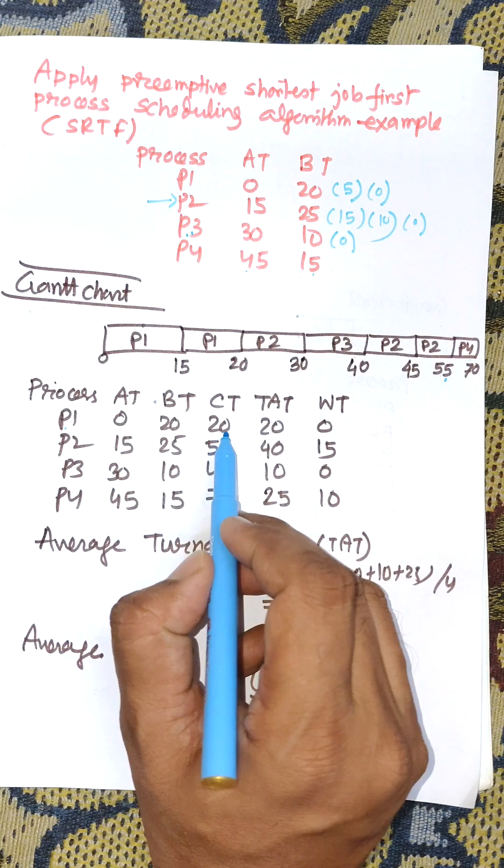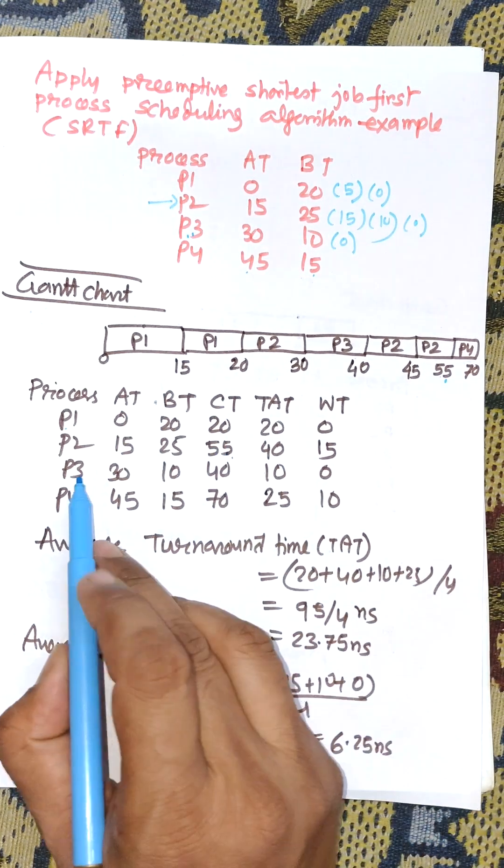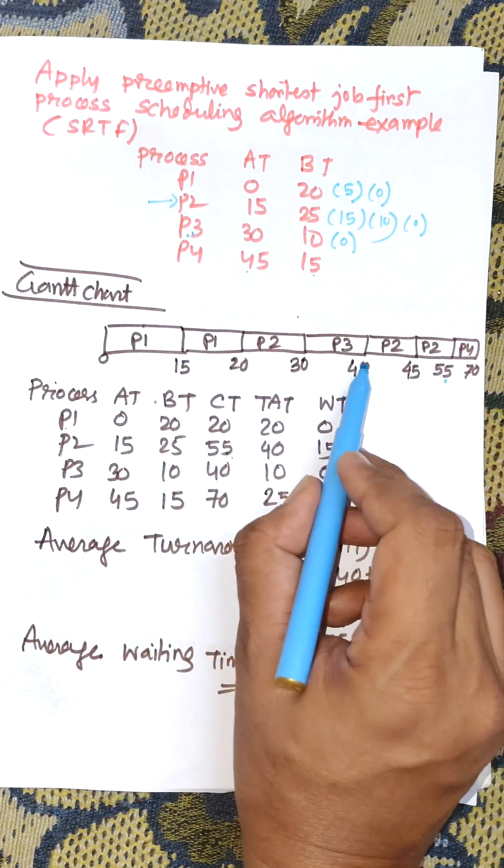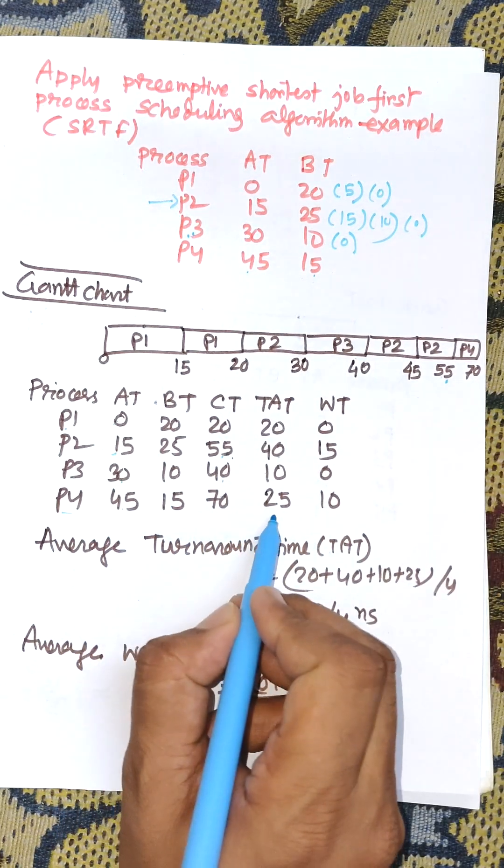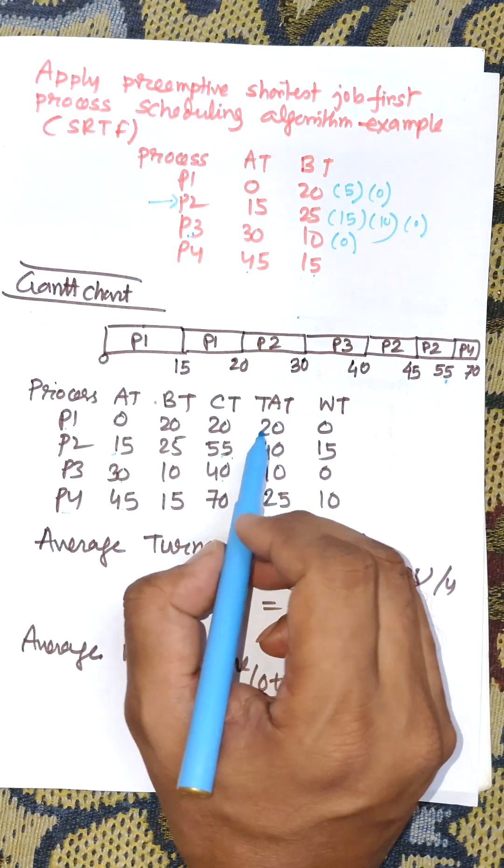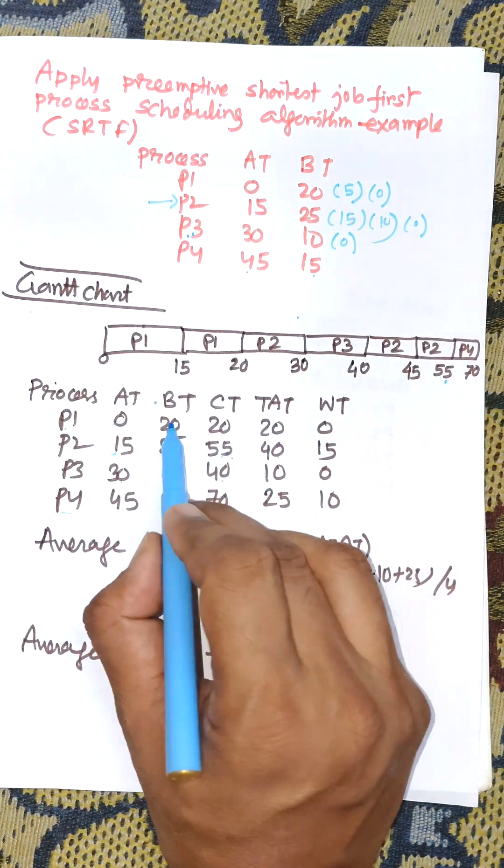The turnaround times are: P1 is 20, P2 completed at 55 so turnaround is 40, P3 has 10, P4 completed at 70 so 70 minus 45 is 25. The waiting time is turnaround time minus burst time. 20 minus 20 is 0.